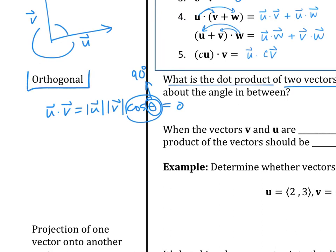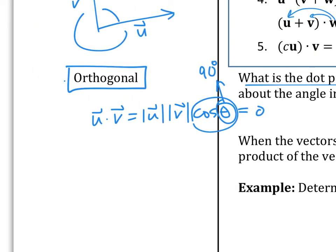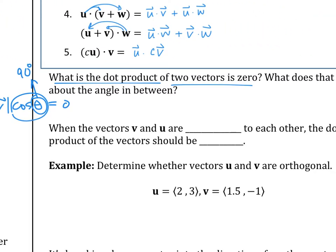What you want to remember is this word: orthogonal. Orthogonal is a way of saying perpendicular. I think we only use this word in a vector world. Orthogonal means perpendicular — make sure you remember that word. If I ask you which vector is orthogonal to this one, I'm asking you which vector is perpendicular to this one. When the two vectors are orthogonal to each other, the dot product should be zero.